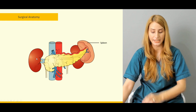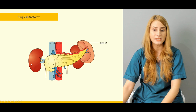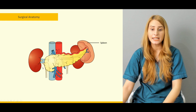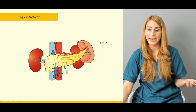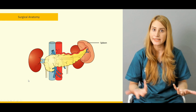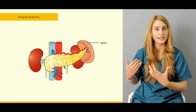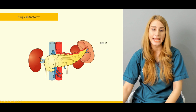The portal vein is also important in relation to the head and neck of the pancreas. Behind the head of the pancreas we have the superior mesenteric artery and vein. The superior mesenteric vein is behind the head of the pancreas but in front of the neck of the pancreas. The tail of the pancreas is related to the spleen.